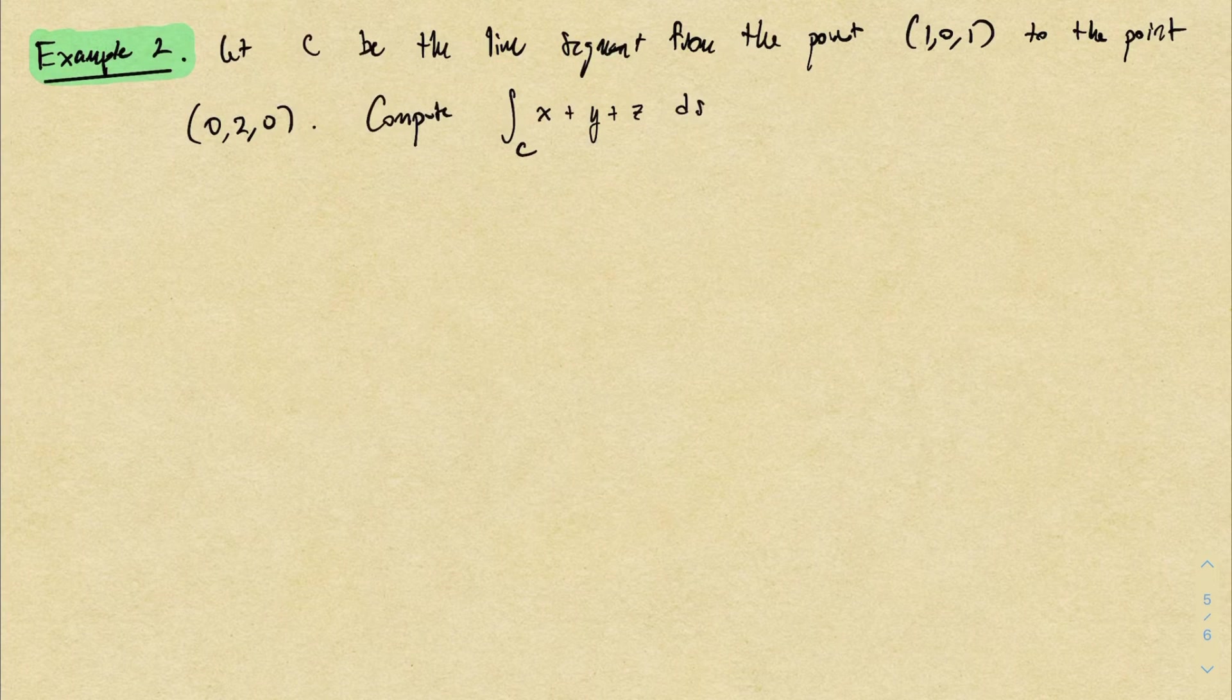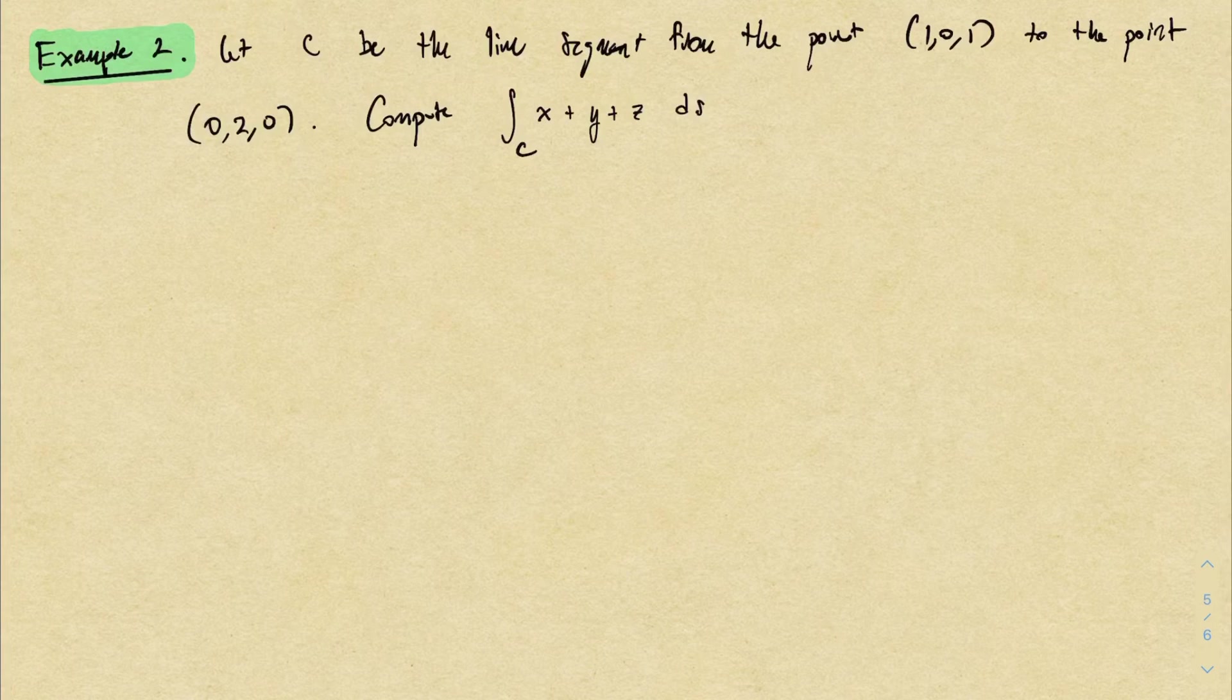Let's look at one more example. This time I'm telling us that the curve C is a line segment from the point (1, 0, 1) to the point (0, 2, 0), and I want to compute a line integral of x plus y plus z over this curve.